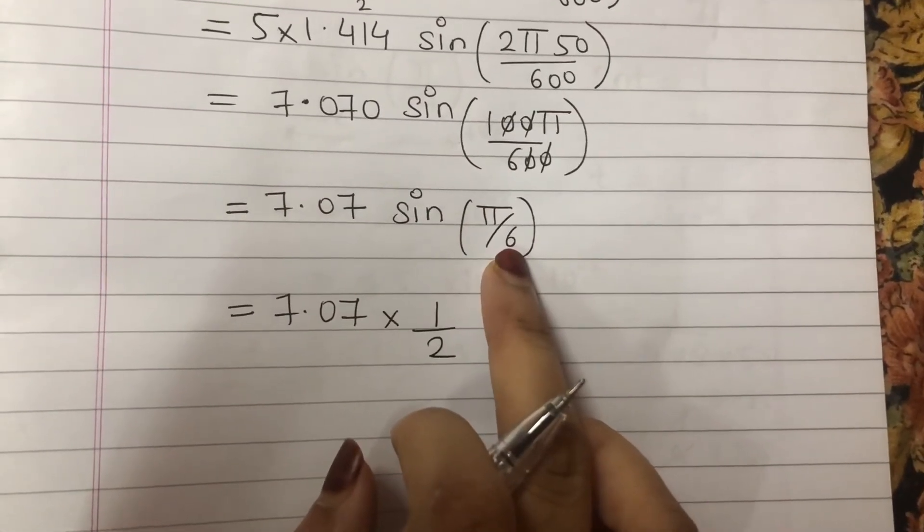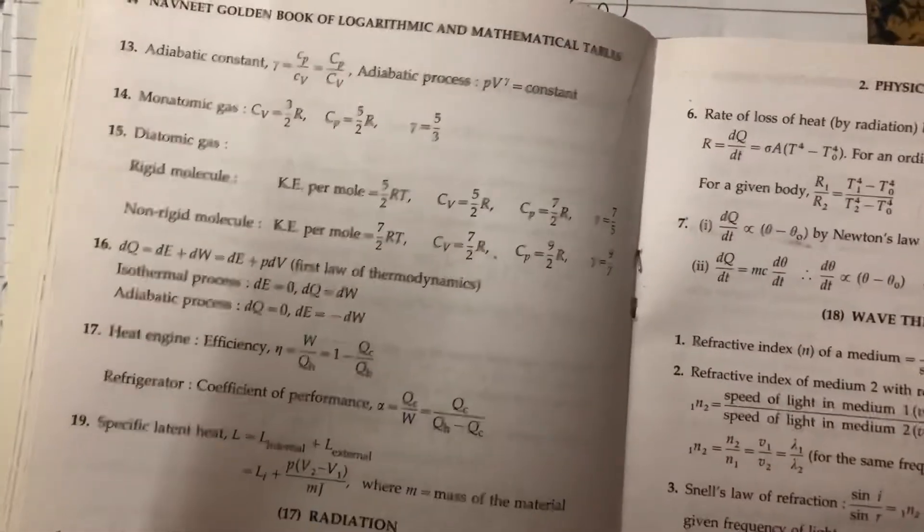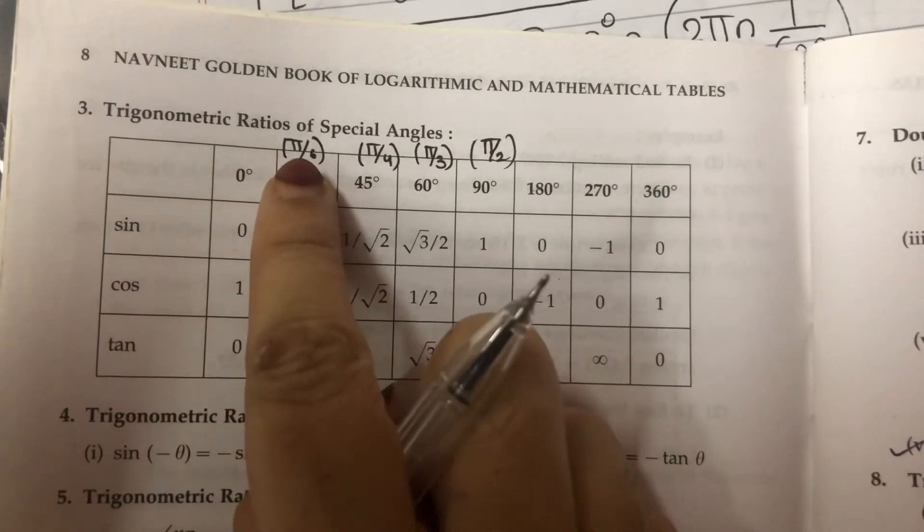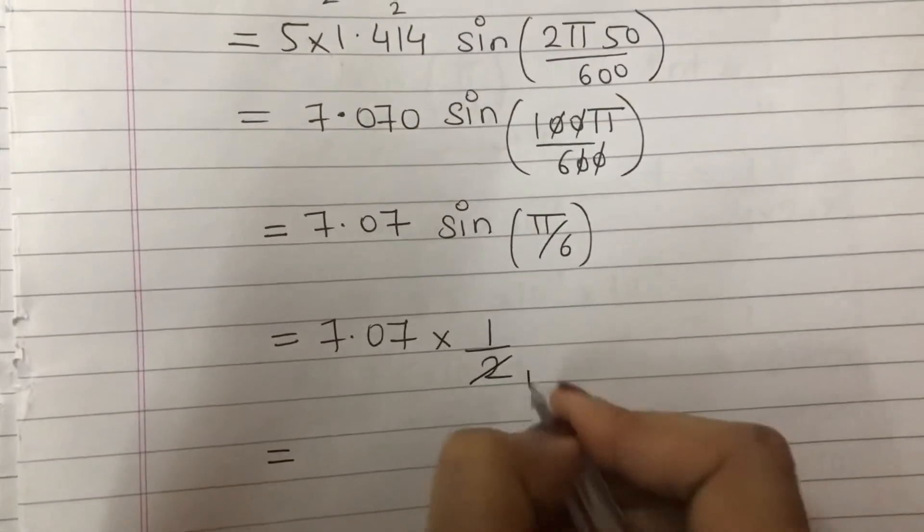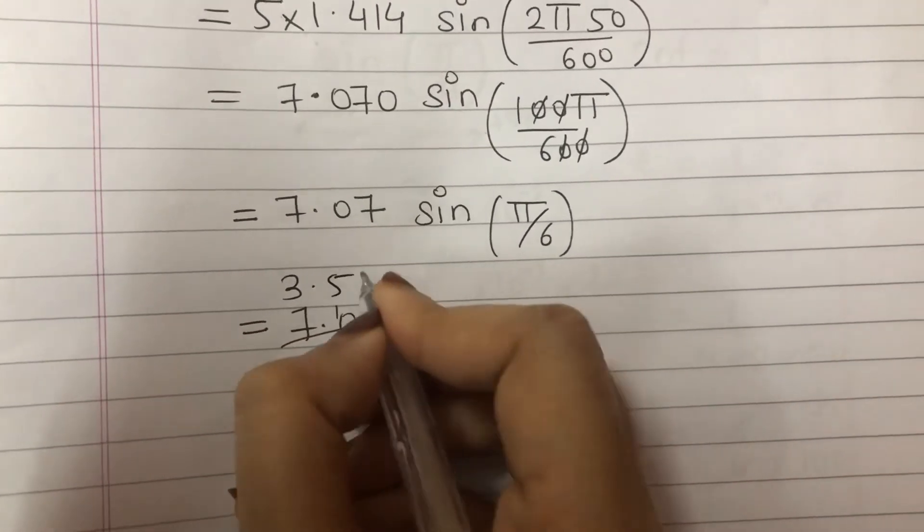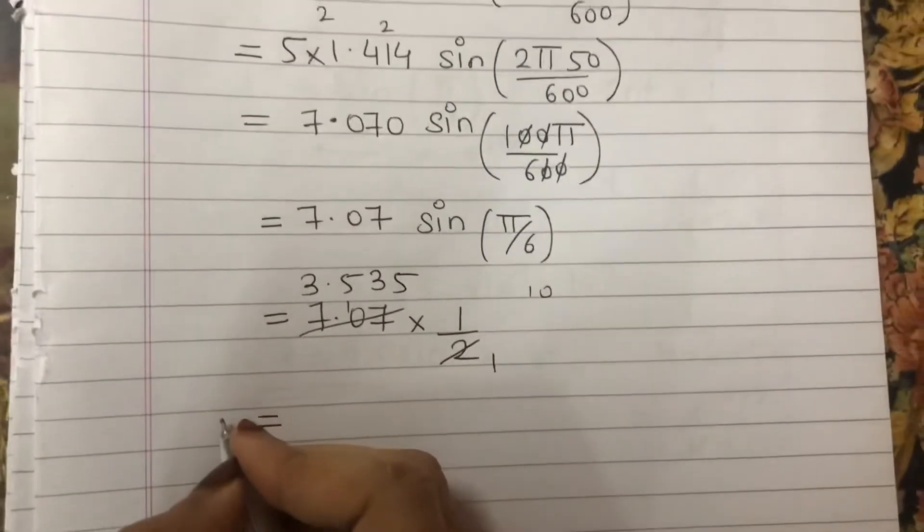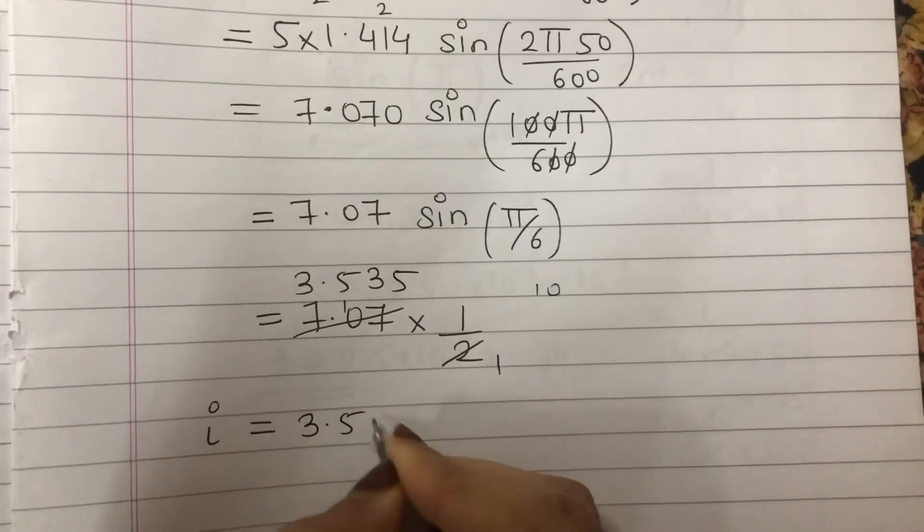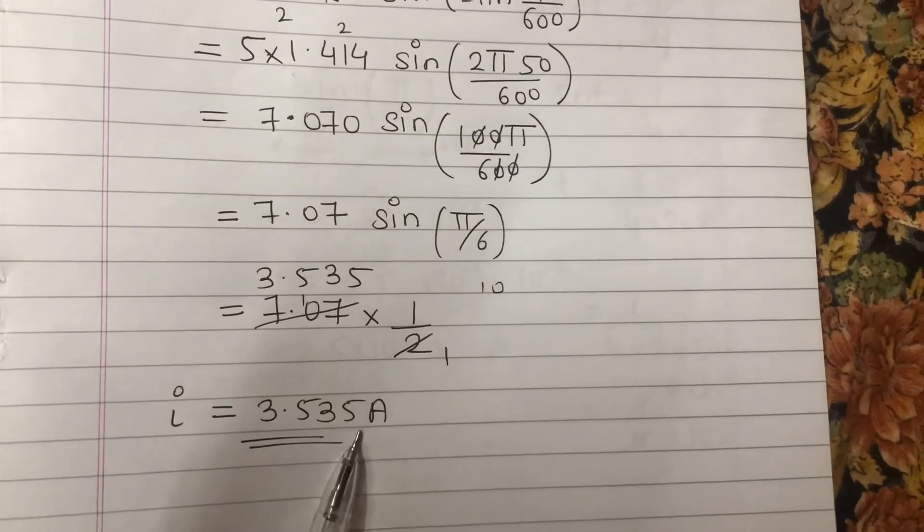Wait, sin pi upon 6 is... I will check. We have a book over here, from the book we will see. Sin pi upon 6, it is 30 degrees, it is 1 upon 2. Okay, so I can write 2 ones, 2 threes are 6, 2 fives are 10, again 2 threes are 6, so 10, 2 fives are 10. So, the value of the current is 3.535 ampere. So at this particular instant, at this particular time, the value of current is 3.535 ampere. Thank you.